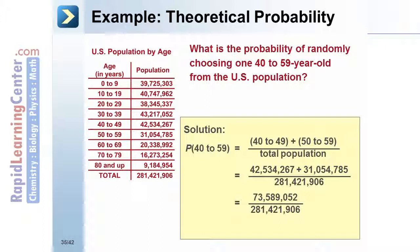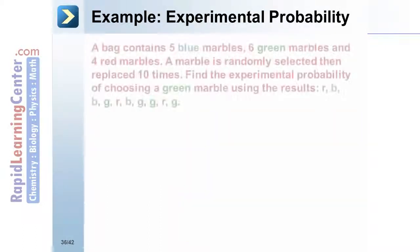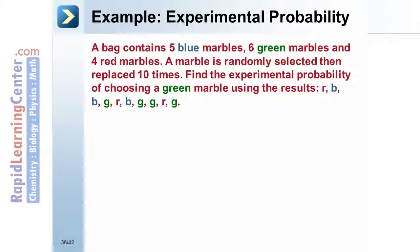Example: Experimental Probability. A bag contains 5 blue marbles, 6 green marbles, and 4 red marbles. A marble is randomly selected, then replaced, 10 times. Find the experimental probability of choosing a green marble using the results: red, blue, blue, green, red,